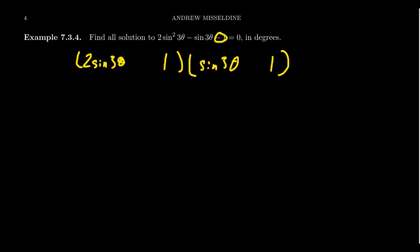Notice 2 sine times sine gives you 2 sine squared. Also, the only way you could get a 1 is a 1 times 1, if we just think of integer factorizations. Now, because this is a negative sign right here, 1 has to be positive, 1 has to be negative. And I'm going to put the negative here and the plus here.